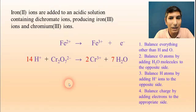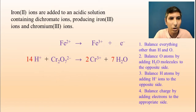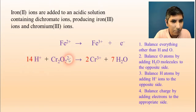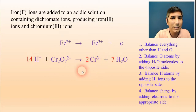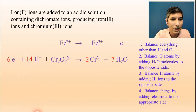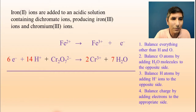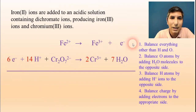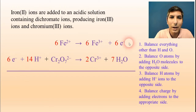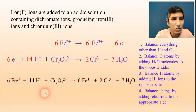Now I can balance my charge since all atoms are balanced. This can be tricky, so be careful. On the left side I have a total charge of +12 (that's +14 and −2), and on the right side I have +6. So to balance +12 versus +6, I add 6 electrons to the left side. Now I'm ready to add the two half reactions together, and to make the electrons disappear I multiply half reaction number 1 by 6. Now those electrons cancel out when I add them together, giving me the overall balanced equation.